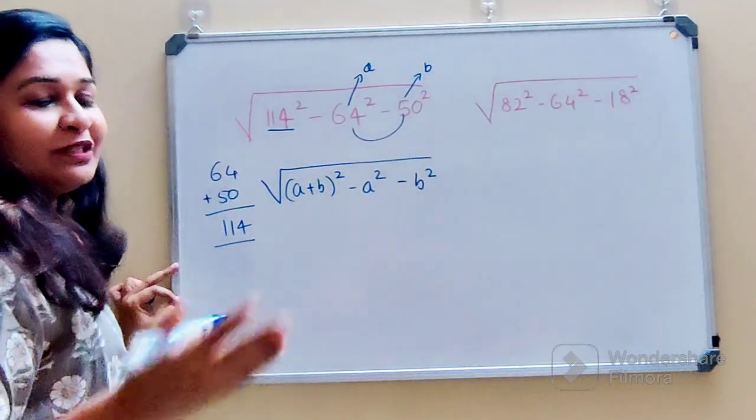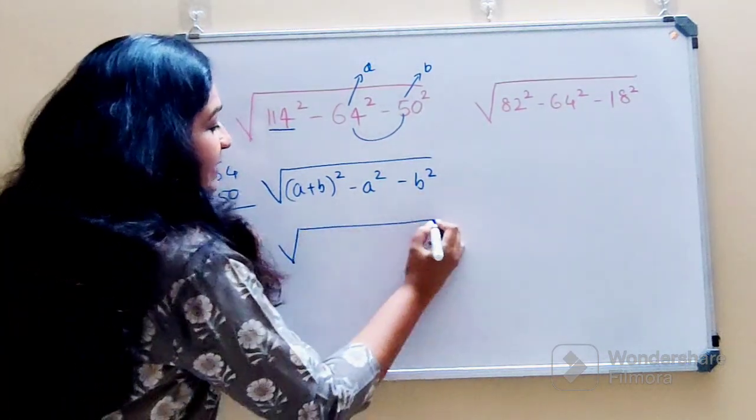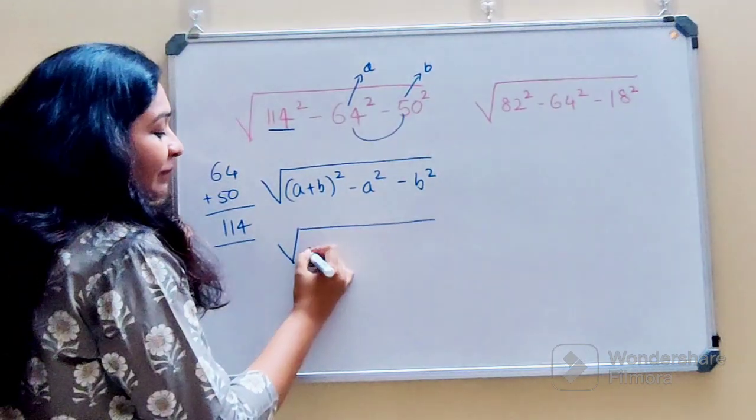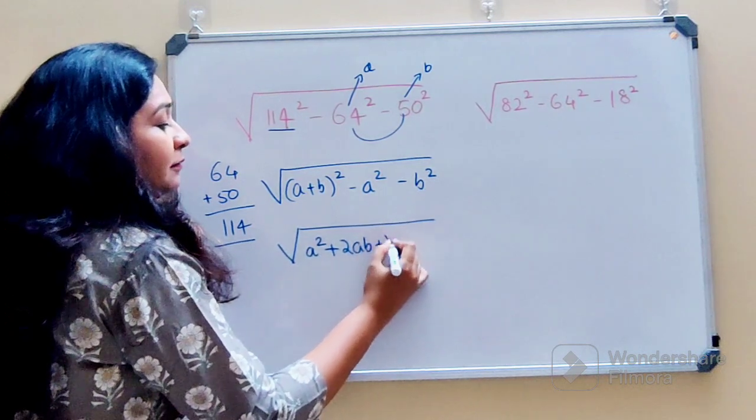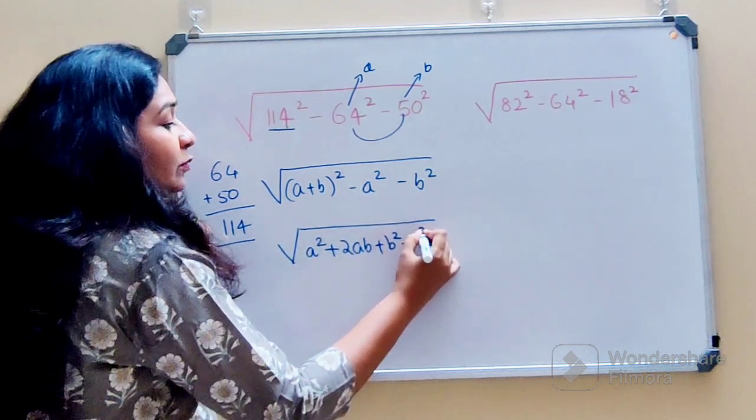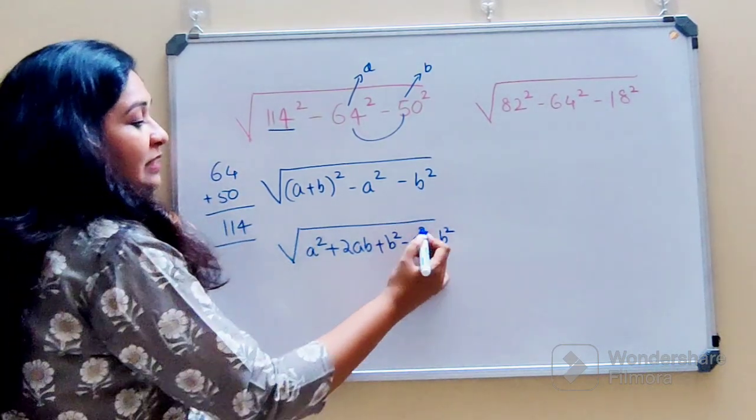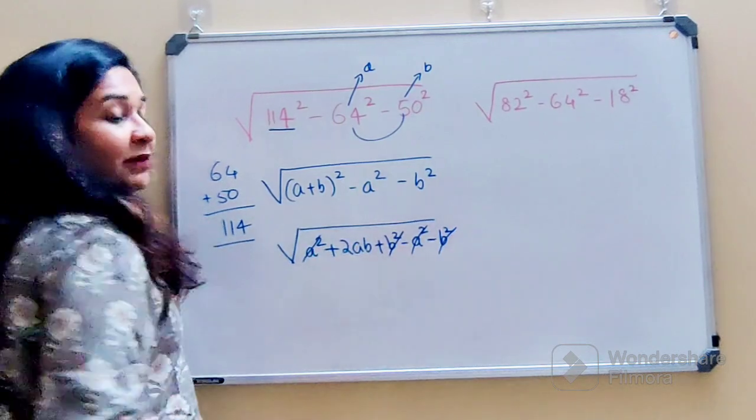I am sure many of you must have already started solving. But for those who are still confused, we can expand this. That becomes A² + 2AB + B² - A² - B². Now if you look closely, A² cancels with -A², and B² cancels with -B².